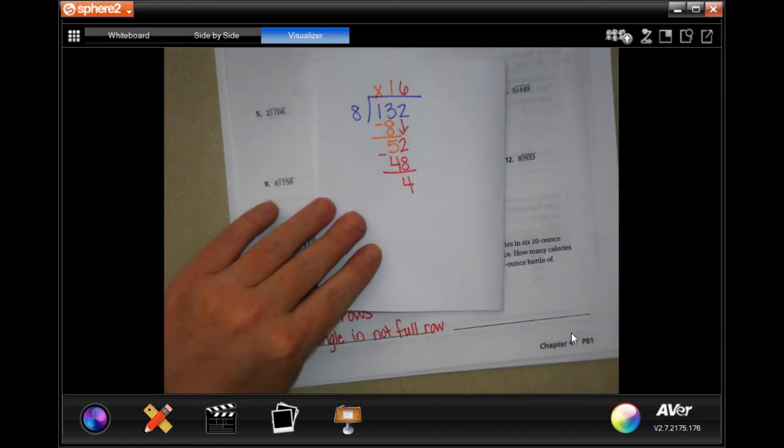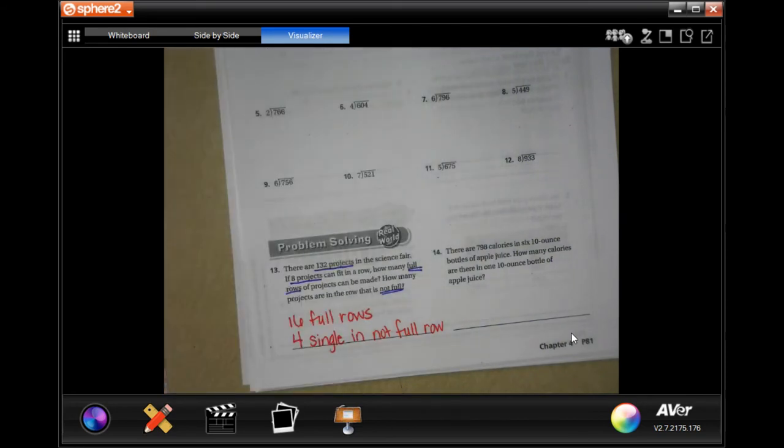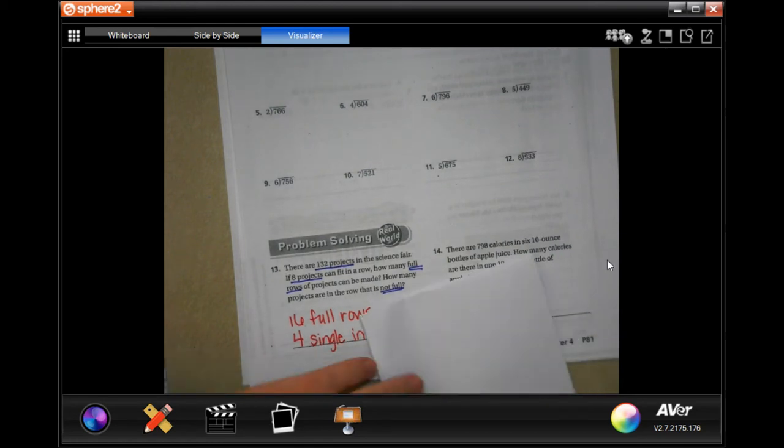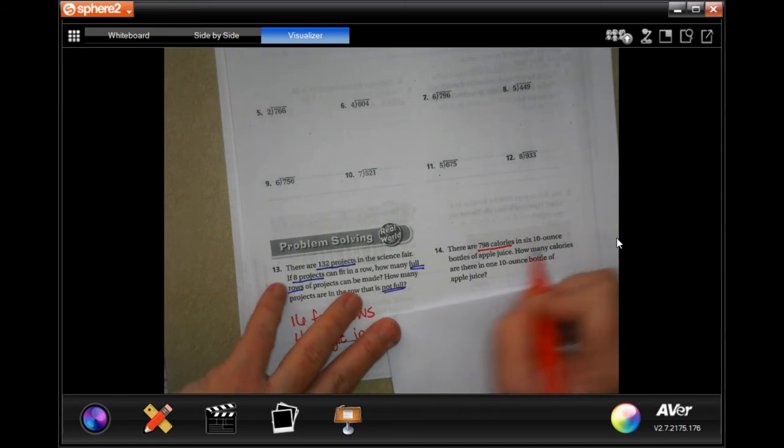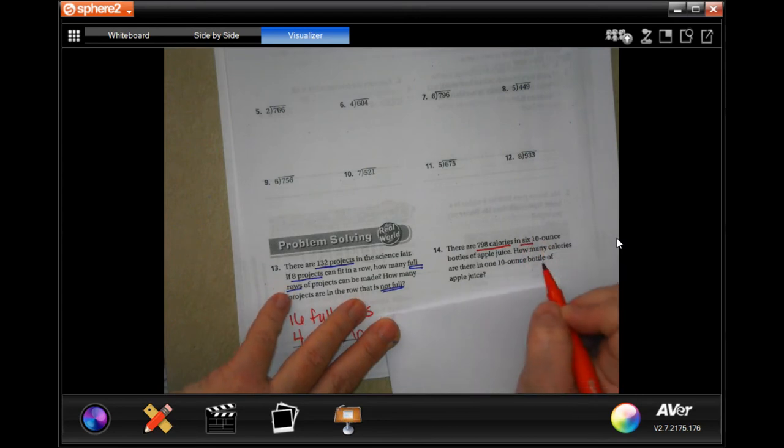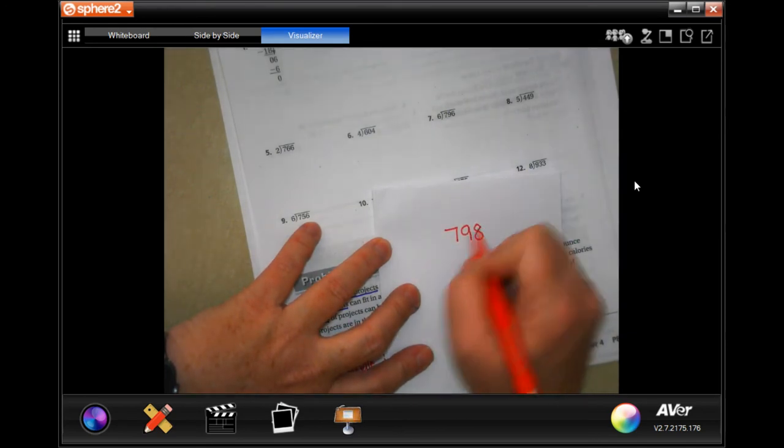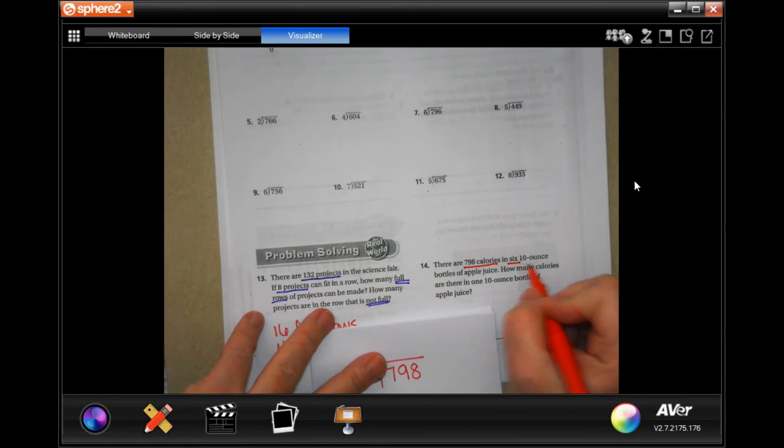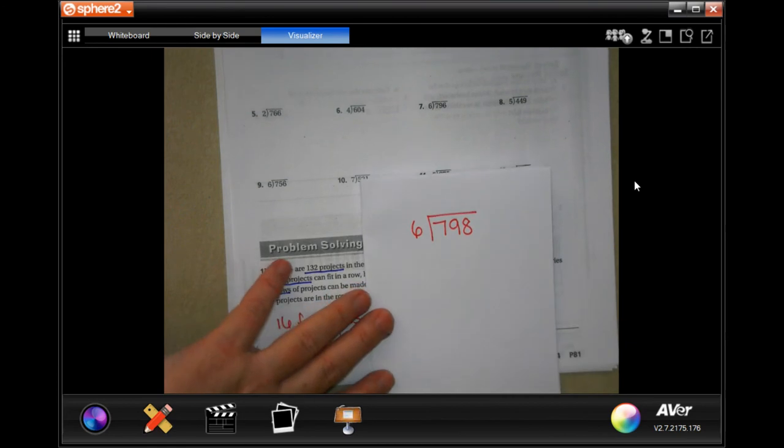Write down your work, guys. It's important. We're going to go to number 14. Says there are 798 calories in six 10 ounce bottles of apple juice. How many calories are there in one 10 ounce bottle? So we're going to divide it by six. So 798 divided by six. I know that it confused you with the 10 ounces. Give me a second, but I had to pause and think about it for a second too.